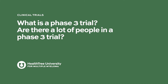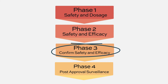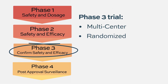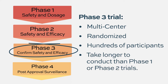What is a phase three trial, and are there a lot of people in a phase three trial? A phase three trial is used to confirm safety and efficacy. In general, these are multi-center, randomized controlled trials. What we are trying to do is identify the regimen that's going to be used potentially for FDA approval. These trials typically involve hundreds of patients and can take anywhere from a couple of years to many years to conduct.